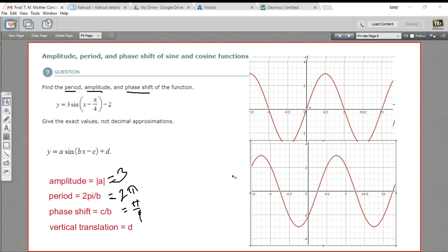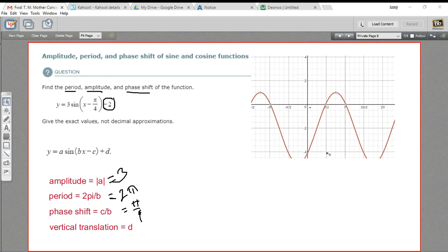And the last thing here is the vertical translation. We've already gotten all the answers they asked for, but this part - that's our d - means you move the whole function down 2. So the final function is going to look like this, where the function has been moved down 2 units. That is how to find the amplitude, the period, and the phase shift of a function like this.